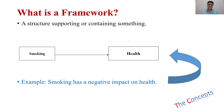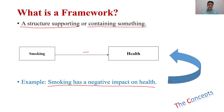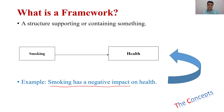Now let's understand what is a framework. A framework is defined as a structure supporting or containing something. For example, there are two boxes and an arrow showing that smoking has a negative relationship with health. What we are doing is putting a theory — which is a relationship between two things — into a framework. A framework is simply boxes and an arrow representing that smoking has a negative relationship with health. So if you put a theory into this kind of structure or framework with boxes and arrows, it is known as a theoretical framework.